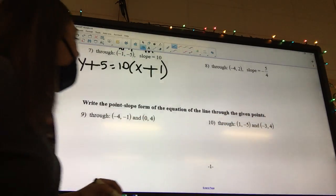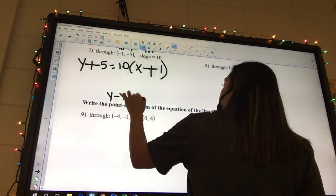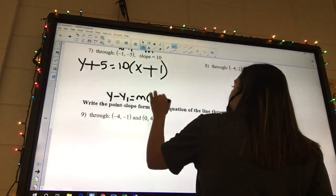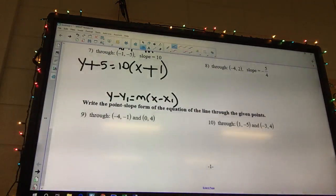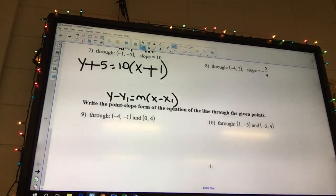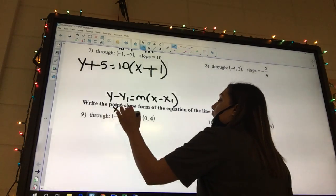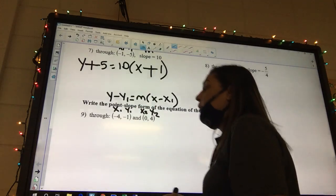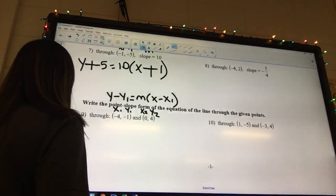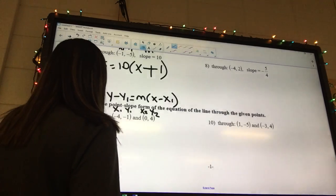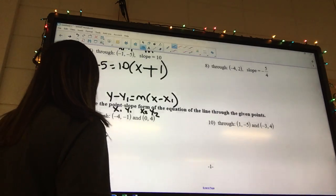This one says write the point slope form. So I got y minus y1 equals mx minus x1. So that's what we need our answer to look like. What formula do we need to use when we have two points? The thing that you did on number 5 and number 6. Yeah. And so we can label these x1, y1, x2, y2. And so we have to find the slope.